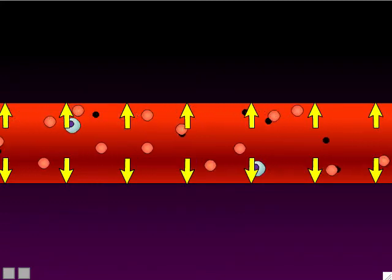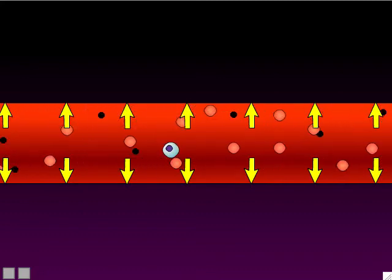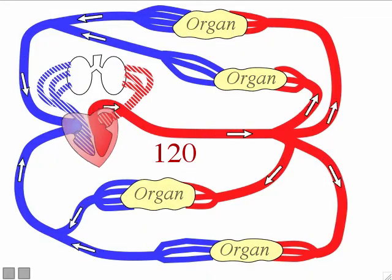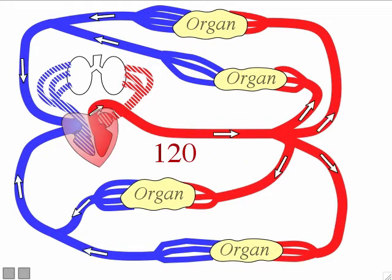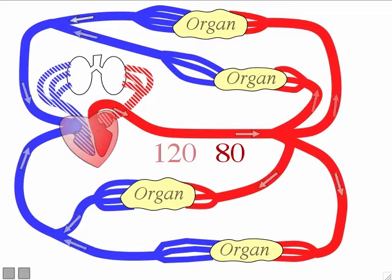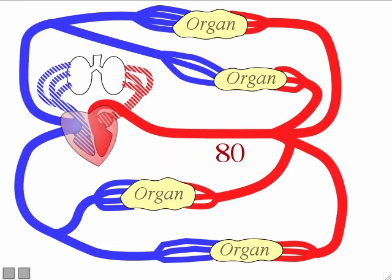When we measure a person's blood pressure, we always get two pressure numbers, not one. The blood pressure is higher when the ventricles are contracting than when the ventricles are relaxing. When the ventricles are squeezing on the blood, that makes higher pressure — called systolic blood pressure, the blood pressure during ventricular systole. The lower blood pressure is called diastolic pressure, during ventricular diastole.